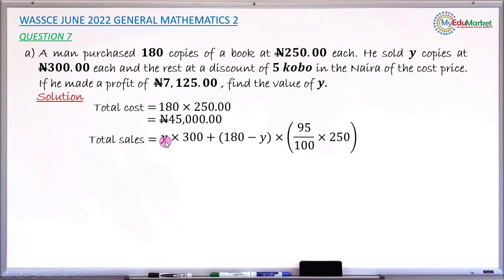Simplifying, Y times 300 gives 300Y. And 95 divided by 100 multiplied by 250 gives 237.5. Next multiply 180 minus Y by 237.5. You have 300Y, then 180 times 237.5 is 42,750, and 237.5 times Y is 237.5Y. Collect like terms: 300Y minus 237.5Y gives 62.5Y plus 42,750. This is the total sales expression.